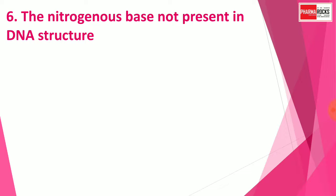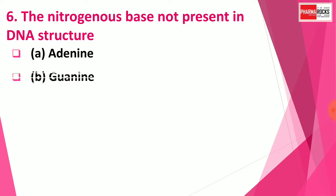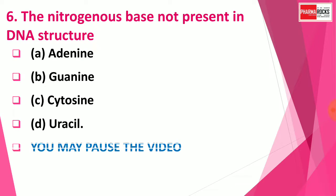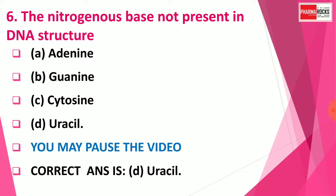Question number 6: The nitrogenous base not present in a DNA structure is — Option A: Adenine, Option B: Guanine, Option C: Cytosine, Option D: Uracil. You may pause the video. The right answer is Option D: Uracil. Uracil is the nitrogenous base not present in the structure of DNA.